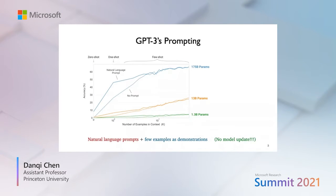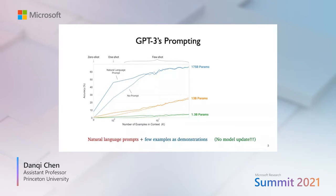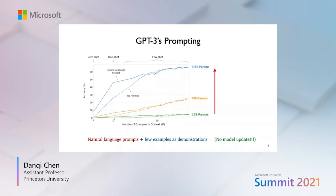The GPT-3 model has a huge number of parameters — 175 billion — and it's basically beyond the reach of most researchers in academia and many research labs. The GPT-3 paper also shows that this prompting behavior only appears in very large models. As you can see from this figure, if the model size is reduced to 1.3 billion parameters, it doesn't work that well.